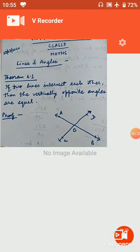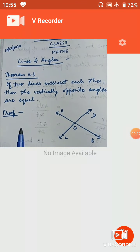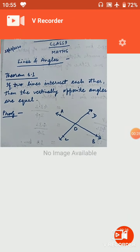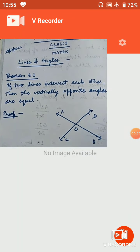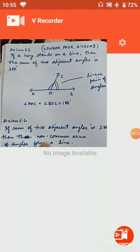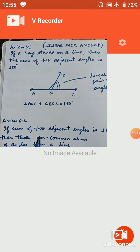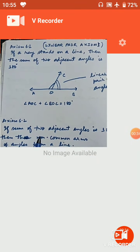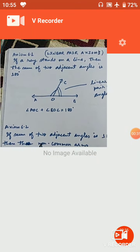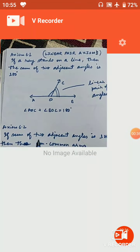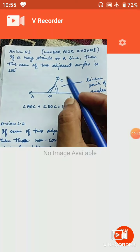Let's see Theorem 6.1. First of all, we will discuss what we did earlier — Axiom 6.1 and 6.2, the Linear Pair Axioms. What is Axiom 6.1?